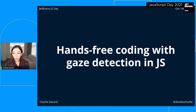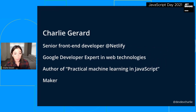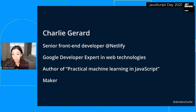We're going to need to use our imagination a little bit in this talk, but hopefully you'll learn something and it will give you some ideas of what you can do in JavaScript. My name is Charlie Gerard, I'm a senior front-end developer at Netlify, a Google Dev Expert in web technologies. Last year I wrote a book called Practical Machine Learning in JavaScript, and I love to make random things with JavaScript.